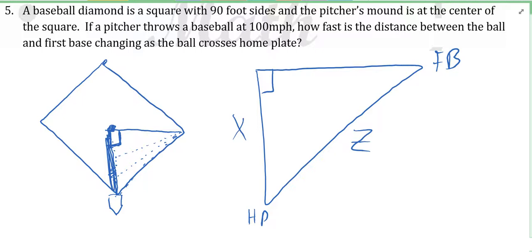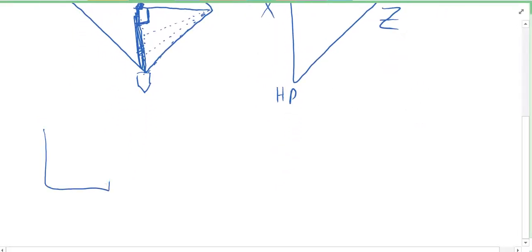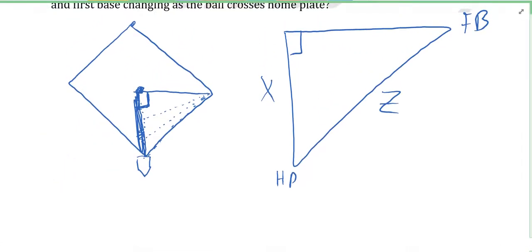We want to know how fast this side is changing - that's the distance from the ball to first base. From the pitcher's mound to first base, that's not changing, that's a constant length. If you take a square and you cut it diagonally and this side's 4, the diagonal must be 4 root 2 always. You can do Pythagorean theorem if you want, but it will be 4 root 2. That's a 45-45-90 triangle.